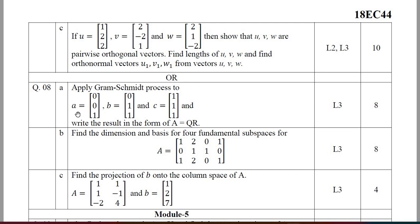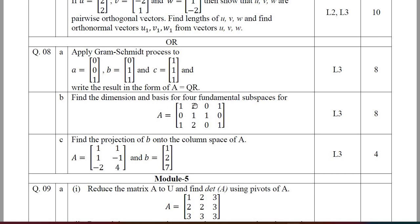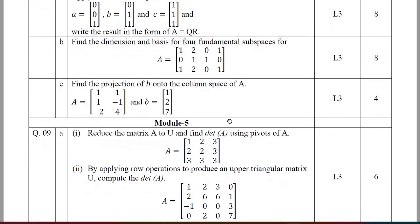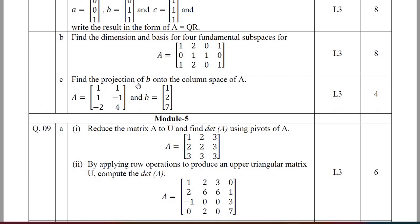Apply the Gram-Schmidt process to a, b, c and write the result in the form A = QR. Find the dimension and basis for the four fundamental subspaces for a given 3×4 matrix. Also, find the projection of b onto the column space of A, where A is a matrix and b is a column matrix. That carries 4 marks and requires just three to four steps.